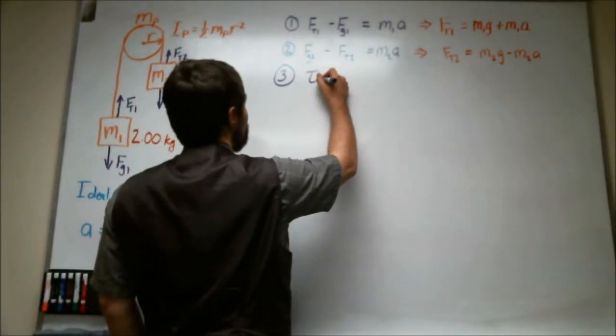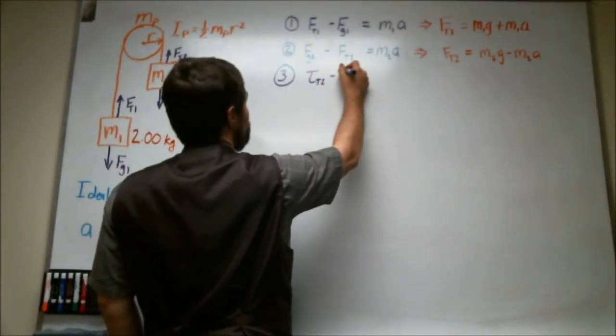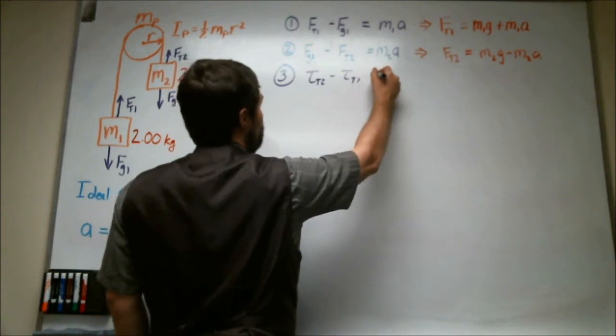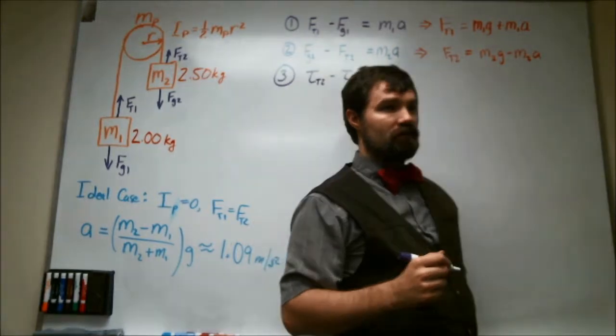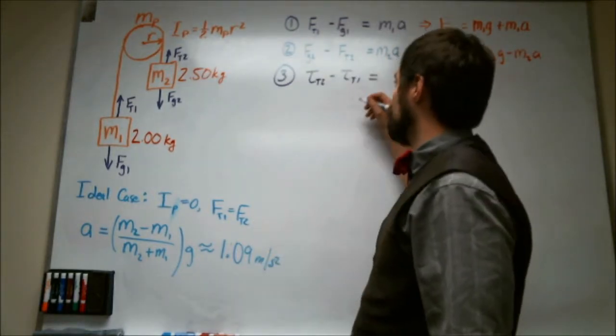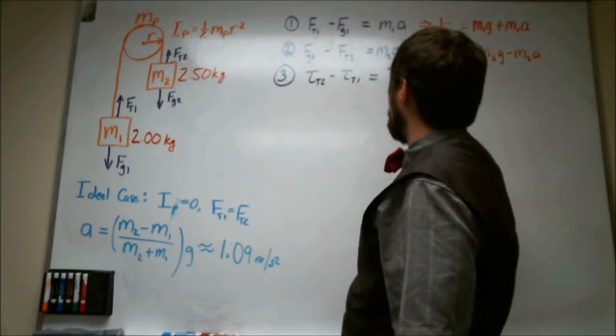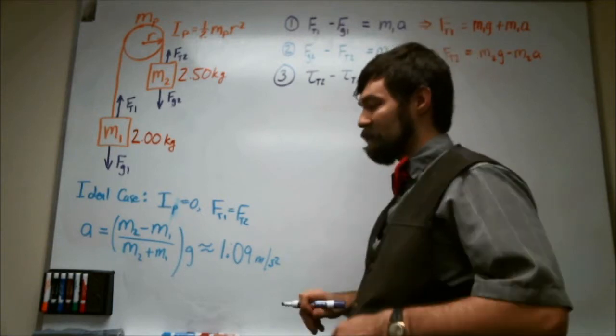And so these two torques basically should be subtracted from one another. And that is going to be equal to the moment of inertia of the pulley times the angular acceleration of the pulley.